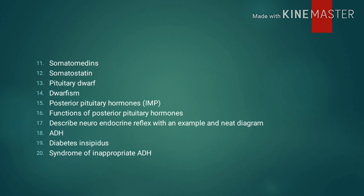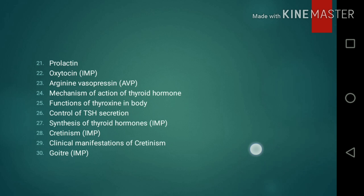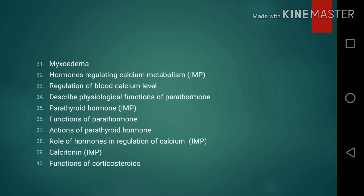Short notes continued: 16. Functions of posterior pituitary hormones. 17. Describe the neuroendocrine reflex with an example and a neat diagram. 18. ADH — antidiuretic hormone. 19. Diabetes insipidus. 20. Syndrome of inappropriate ADH secretion. 21. Prolactin. 22. Oxytocin. 23. Arginine vasopressin. 24. Mechanism of action of thyroid hormone. 25. Functions of thyroxine in the body. 26. Control of TSH secretion. 27. Synthesis of thyroid hormones. 28. Cretinism. 29. Clinical manifestations of cretinism. 30. Goiter. 31. Myxedema.